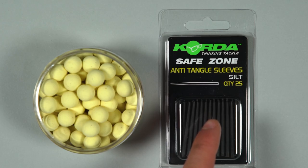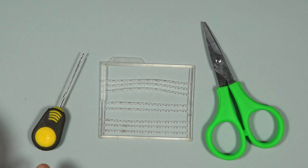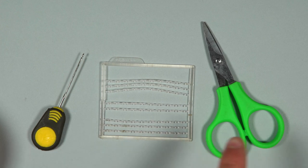An anti-tangle sleeve. And lastly you'll need a baiting needle, bait stops and a pair of scissors.